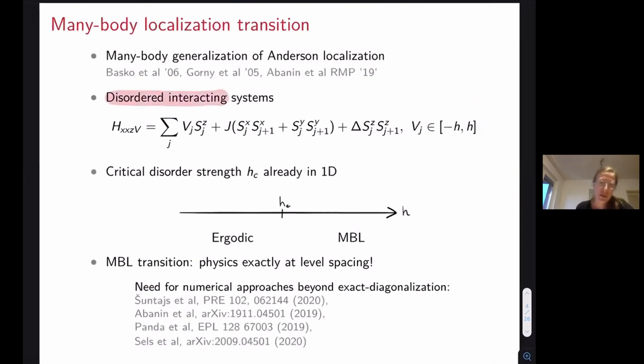MBL transition is a transition that happens in disordered interacting systems. When such a system has strong enough disorder, the system changes from being thermalizing and ergodic into being many-body localized and behaving as an insulator at arbitrary temperatures. Why this turned out to be quite challenging, especially for numerical description, is for example because on the ergodic side the eigenstates show area law, while on the MBL side they show volume law behavior.